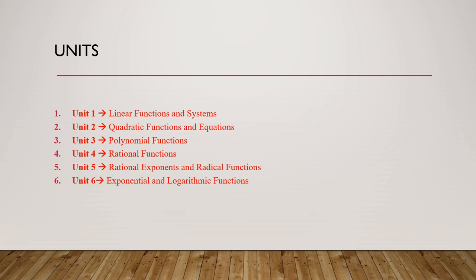In Unit 4, we are going to talk about rational functions. Rational functions are special functions that have the form f(x) equals p(x) over q(x) — in other words, rational functions are the ratio of two polynomials. In this unit, we are going to learn how to find the domain of rational functions, how to graph them, how to find the different asymptotes, and how to solve a rational equation.